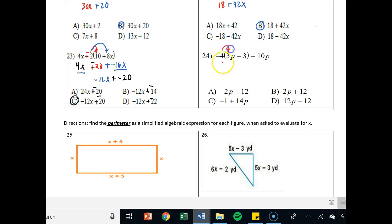Number 24. Negative 4 times 3p is a negative 12p plus a negative. Negative 4 times negative 3 is plus a positive 12. Drop down the 10p. We do not distribute to that because it's outside the parentheses. Now go ahead and find like terms. Negative 12p and 10p. Negative 2p. Drop down your 12 because that is not a like term since it doesn't have p. And your answer is A.